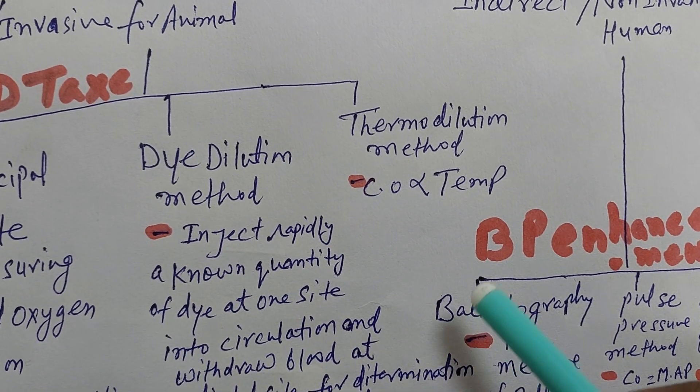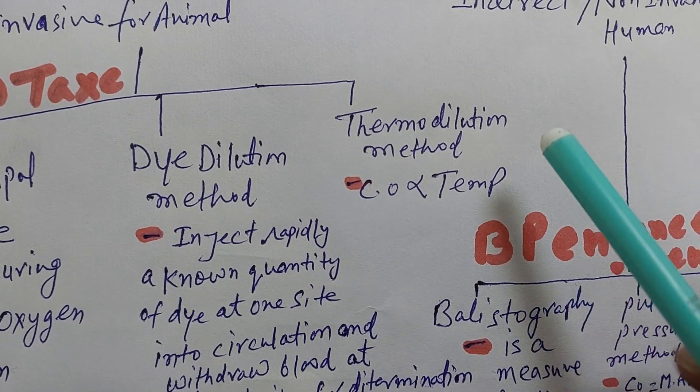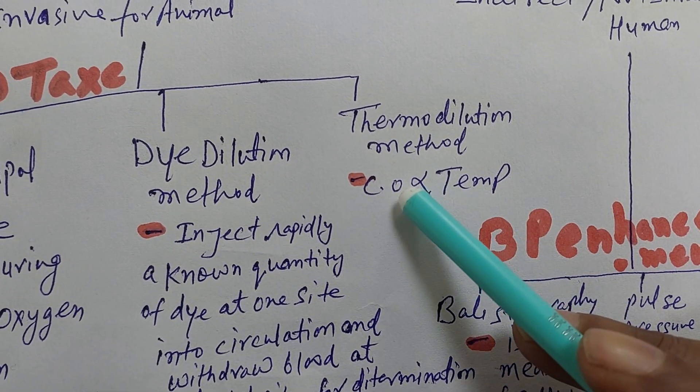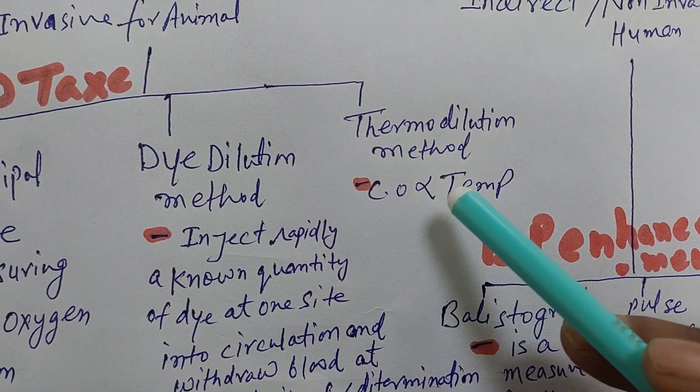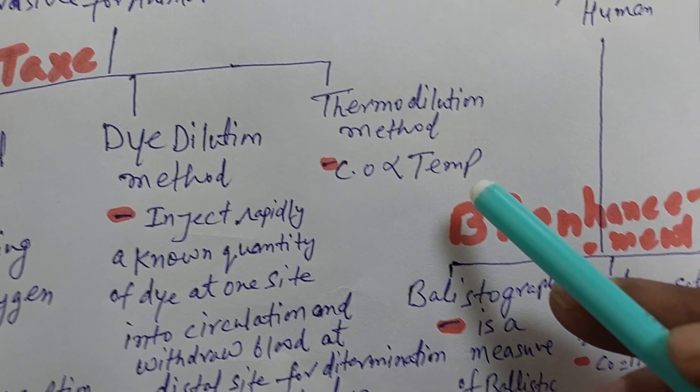The third method is thermodilution. The principle is that cardiac output is proportional to temperature change.